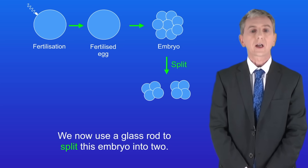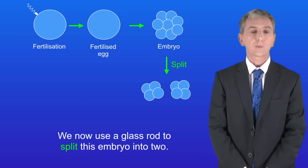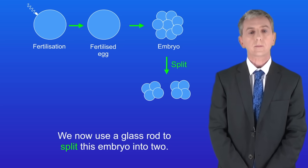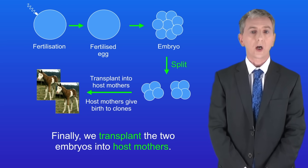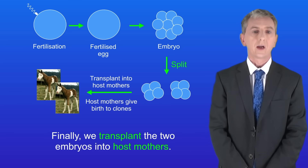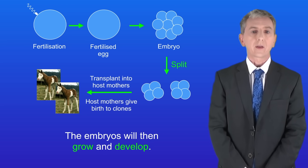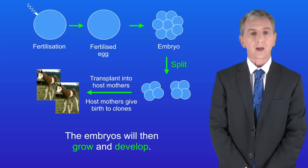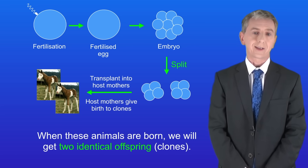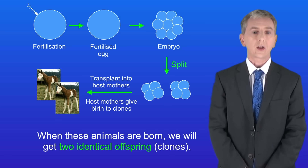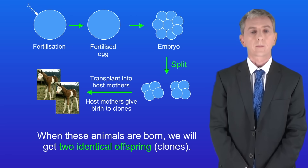We now use a glass rod to split this embryo into two. Finally we transplant the two embryos into host mothers. The embryos will then grow and develop, and when these animals are born we will get two identical offspring — in other words, clones.